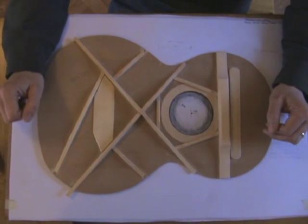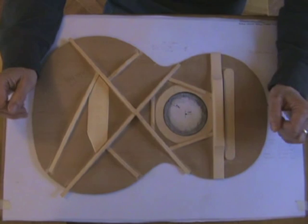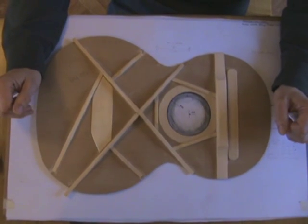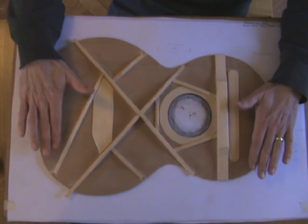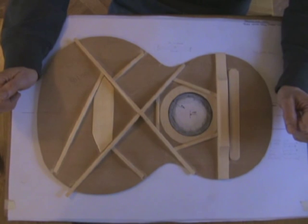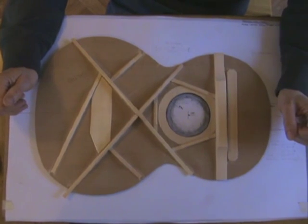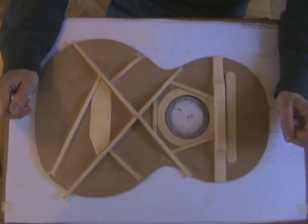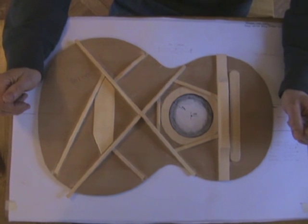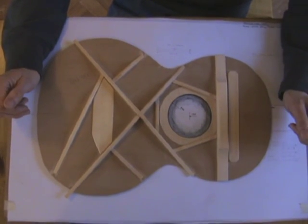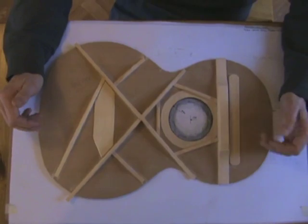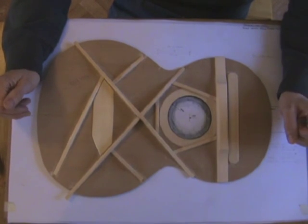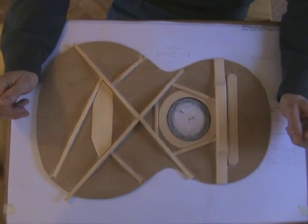You can see the bracing pattern. I always use Sitka spruce as bracing no matter what the soundboard material is. Sitka has the best strength to weight ratio of any wood, and essentially what that means is that you can use less of it for the same amount of strength.